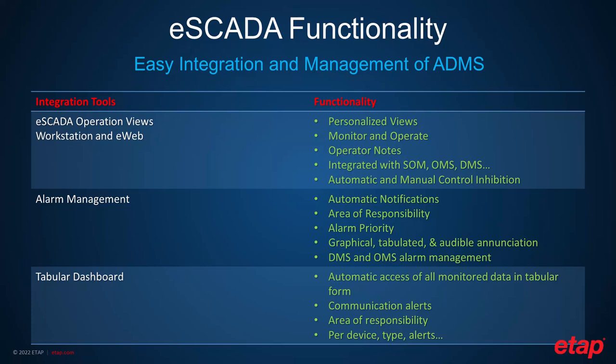The alarm management allows you to define automatic notification, area of responsibility, and alarm priorities. The system has a graphical, tabulated, and audible annunciation system. It ties to the DMS and OMS, so you can set up alarms based on distribution or analytical solutions, as well as getting information from OMS. When, for example, a call or several calls come in and the location of the fault is determined, an event can be integrated and an alarm can be generated.